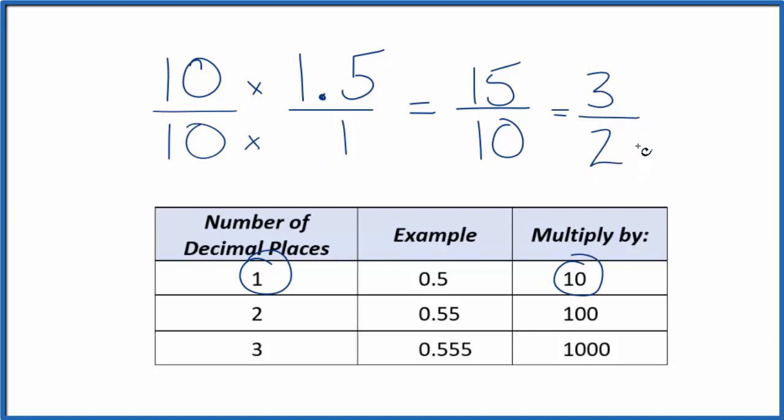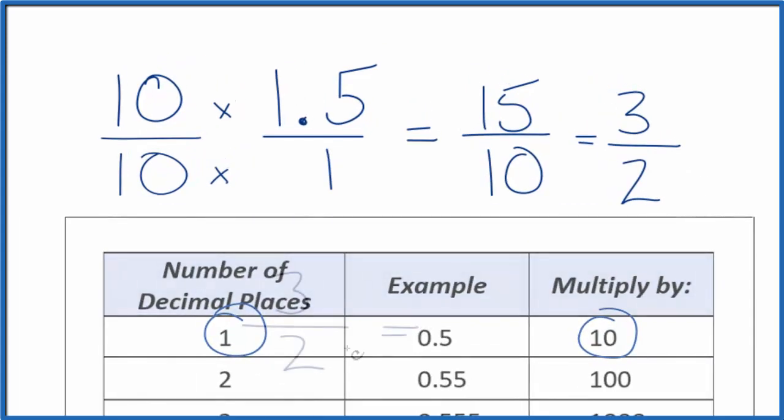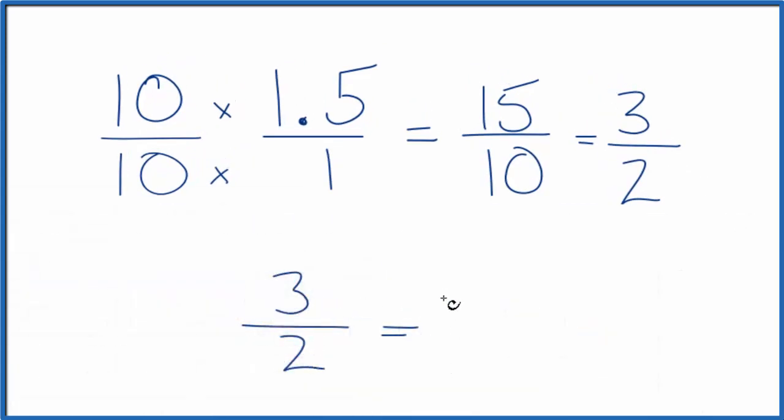We could convert this to a mixed fraction. Let's give ourselves some room. Because 2 goes into 3 one time with 1 left over, so we have 1.5. So 1.5, that's equal to the fraction 1 and a half.